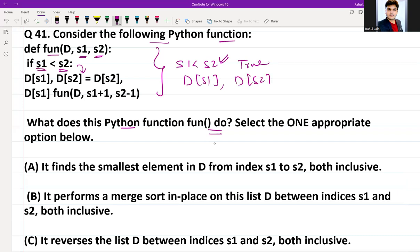So we are performing swapping. After that, we are incrementing the value of s1 by 1 and decrementing the value of s2 by 1, and recursively calling the function again. Until the particular condition is true, it is just swapping, which means it is reversing.